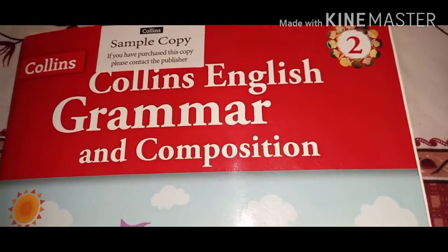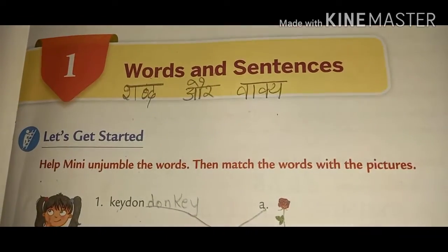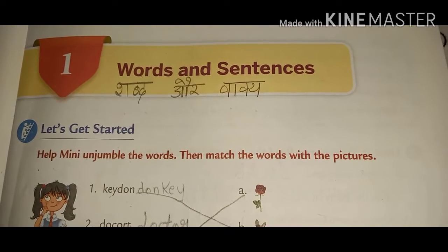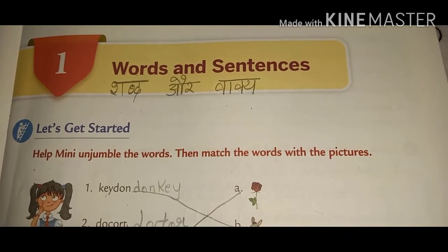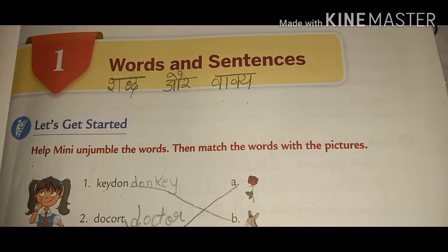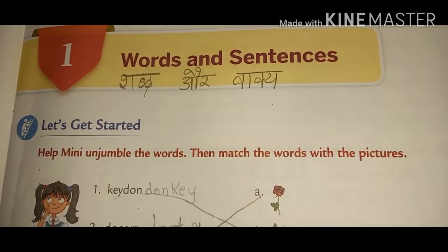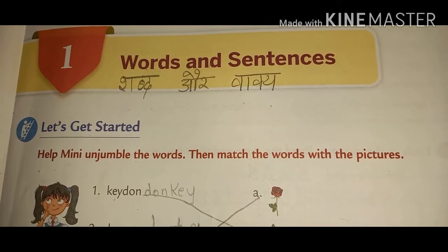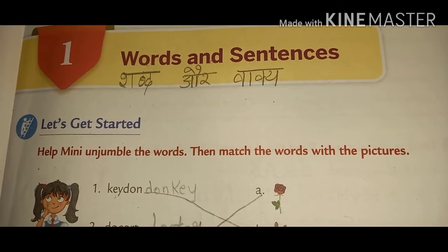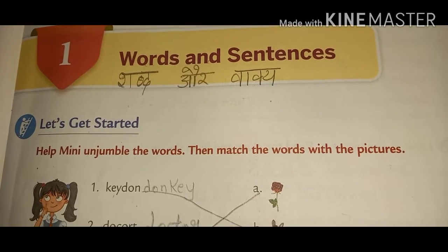So children, open your books. We will start with the revision of Chapter 1, that is Words and Sentences. We will start the revision with a thought: 'Never leave things for tomorrow which you can do today.' It means that you should not leave any work for tomorrow. So never leave things for tomorrow and do it today itself. This is your thought for today, children, and we will start the revision of Chapter 1, Words and Sentences.